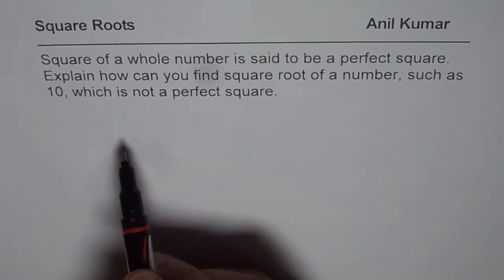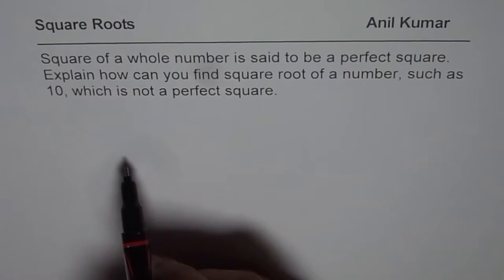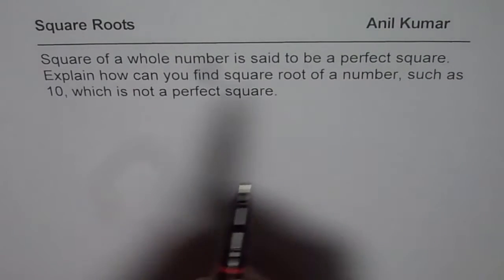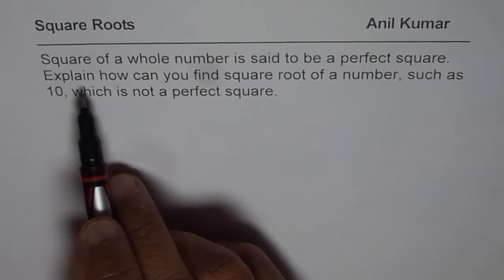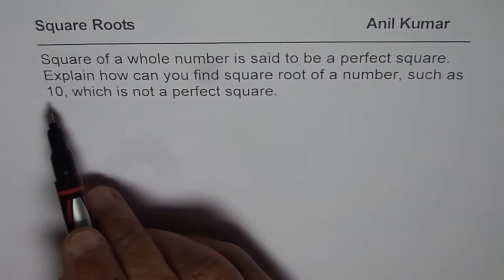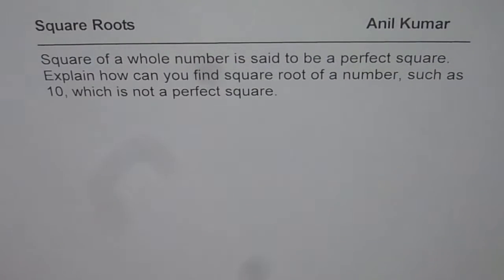Square of a whole number is said to be a perfect square. For example, 7 square is 49, so square root of 49 is 7. So that is a perfect square. Explain how can you find square root of a number such as 10 which is not a perfect square.